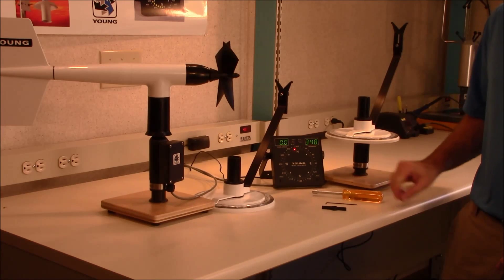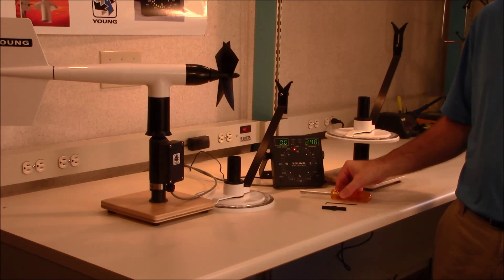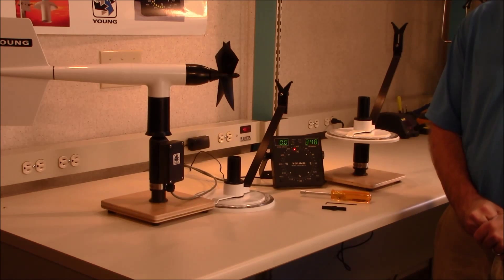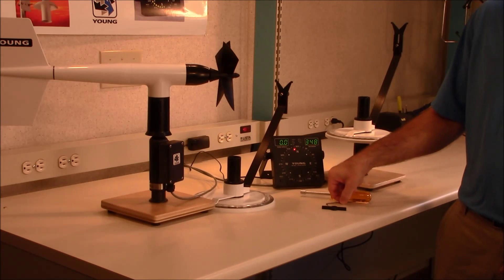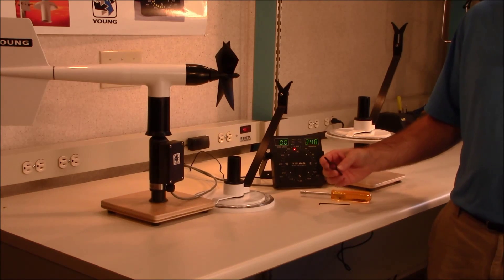The tools you will need are a nut driver or flat head screwdriver to loosen the band clamp on your wind monitor, the hex wrench included with your wind monitor, and the propeller nut wrench if you have the new style propeller nut.